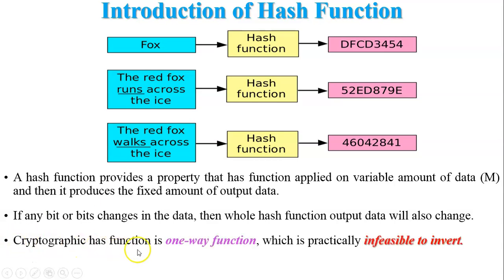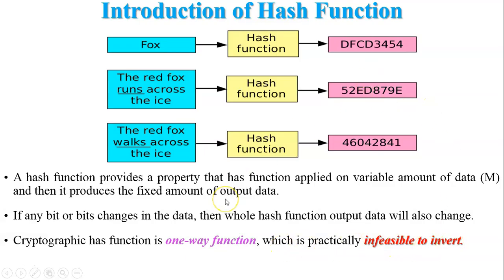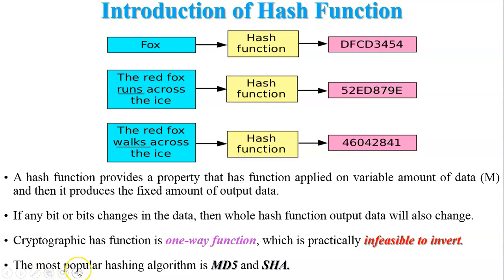A cryptographic hash function is a one-way function, which is practically infeasible to invert. For example, given the message 'fox', a hash value is generated — but if you only have that hash value, you cannot retrieve the original message from it. This is called a one-way function. The most popular hashing algorithms are MD5 and SHA — MD5 is Message Digest 5 and SHA is Secure Hash Algorithm.